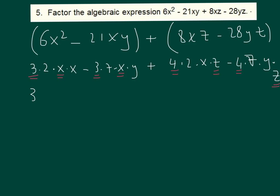So let's start factoring: three X times two X minus seven Y, plus four Z times two X minus seven Y.